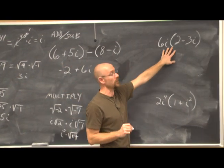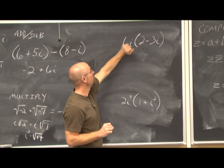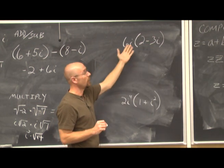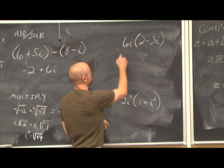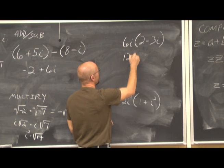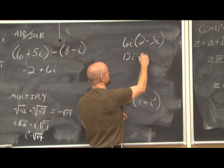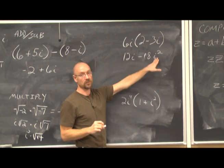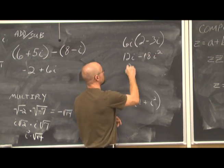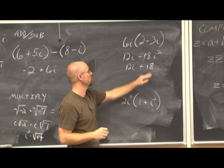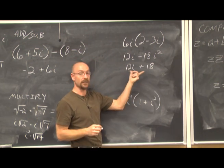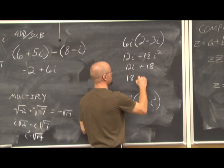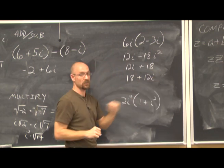For multiplication of a pure imaginary number times a complex number, we use the distributive property. 6i times 2 is 12i; 6i times negative 3i is negative 18i squared. Since i squared is negative 1, negative 18 times negative 1 is positive 18. Written in proper a plus bi form with the real part first: 18 plus 12i.